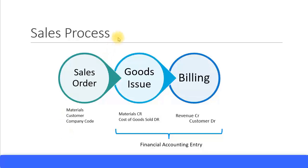Let's have a look at the sales process. Initially you create a sales order, in which you mention your customer master, what materials you're going to sell, the quantity, the pricing, and so on. All this information is captured in the sales order relevant to your sales org, company code, and so on. At this point it is only a commitment that you are selling these items to the customer — there are no financial accounting entries at the time of just creating a sales order.